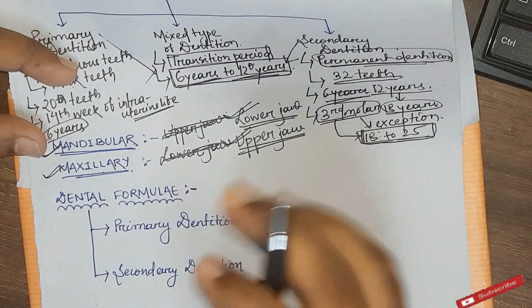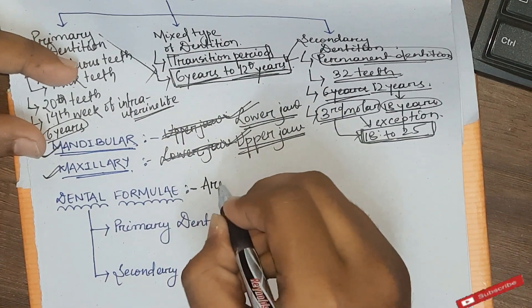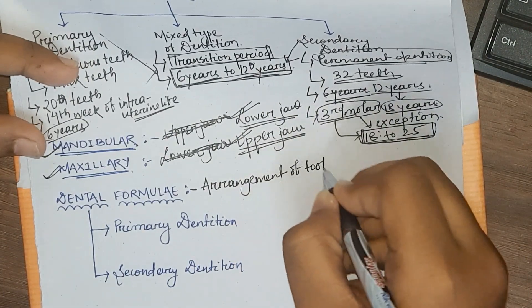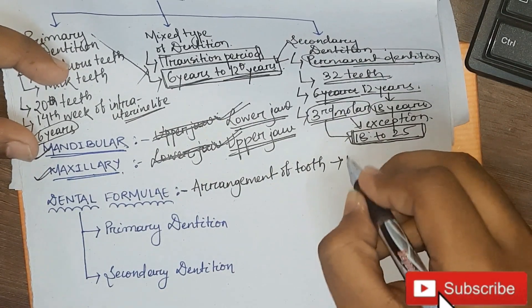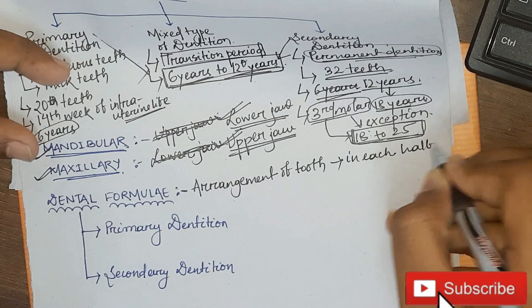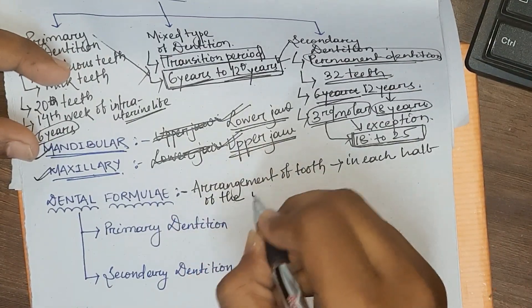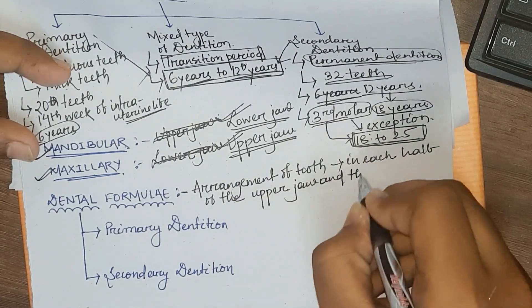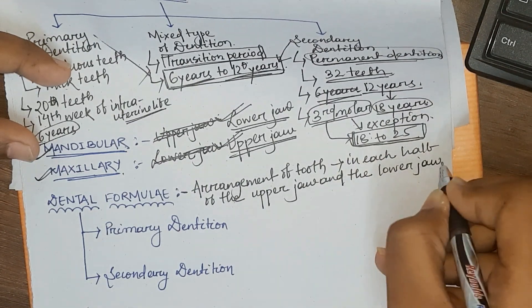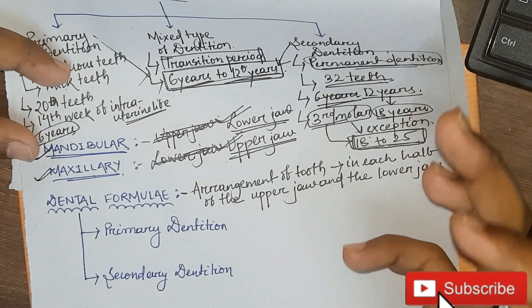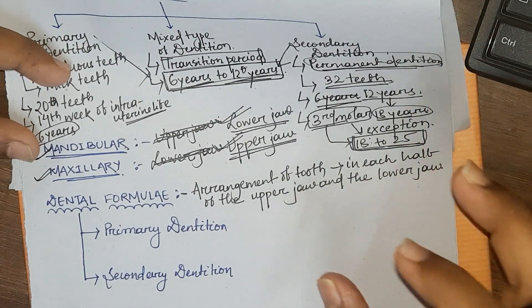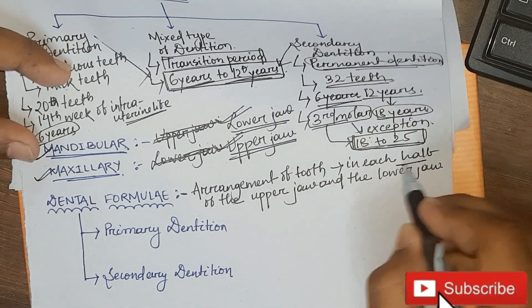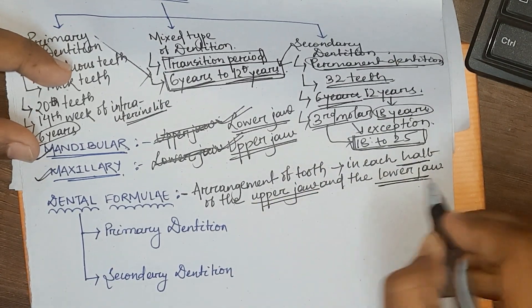Now we will read about the dental formula. What is the dental formula? It is the arrangement of teeth — specifically, the arrangement of teeth in each half of the upper jaw and each half of the lower jaw. The formula is given for primary dentition and for secondary dentition according to the arrangement of teeth present in each half of the upper and lower jaw.